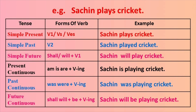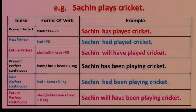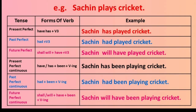आता 'Sachin plays cricket' हे एक वाक्य बारा काळांमध्ये कसे करतात ते पाहूया: Sachin plays cricket / Sachin played cricket / Sachin will play cricket / Sachin is playing cricket / Sachin was playing cricket / Sachin will be playing cricket / Sachin has played cricket / Sachin had played cricket / Sachin will have played cricket / Sachin has been playing cricket / Sachin had been playing cricket / Sachin will have been playing cricket. या पद्धतीने एक वाक्य बारा काळांमध्ये केले.